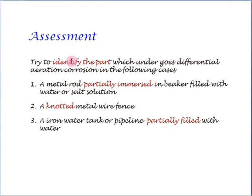Try this assignment. Try to identify the part which undergoes differential aeration corrosion in the following cases: a metal rod partially immersed in a beaker filled with water or salt solution, a knotted metal wire fence, and an iron water tank or pipeline partially filled with water.